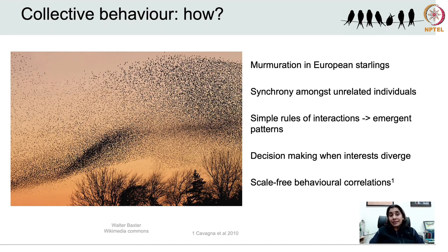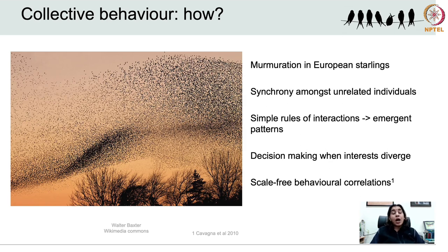The large-scale pattern seen in murmuration is a result of coordinated movements bound by a set of decision rules, such that individual members cannot completely behave independently. Collective movement is a result of simple rules of interaction followed by participants, resulting in spectacularly complex patterns that are emergent properties of the group but not of individual members per se. The obvious question is: how are these decisions made, and who makes these decisions?